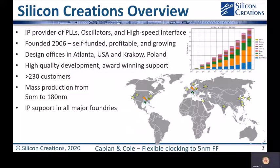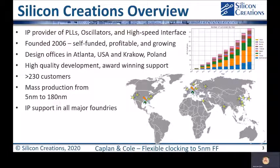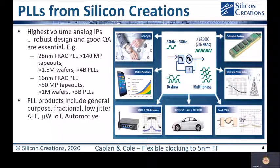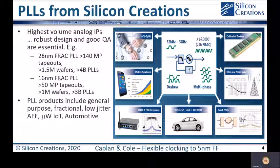Our company has been in business since 2006 and today we've served more than 230 customers, helping them bring chips to production in 5 nanometers through to 180. The quality of our IPs and our excellent support have resulted in multiple awards from TSMC and SMIC. Much of our revenue comes from PLLs and the core of this business is our fractional PLL architecture. The versatility of this PLL has resulted in some staggering production volumes — for example, in 28 nanometers we've helped bring more than 140 chips to mass production with more than 4 billion PLLs proven in the market.